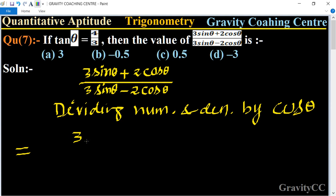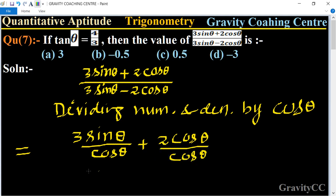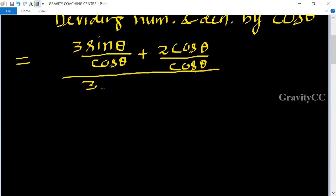Equal to 3 sin theta upon cos theta plus 2 cos theta upon cos theta, upon 3 sin theta upon cos theta minus 2 cos theta upon cos theta.